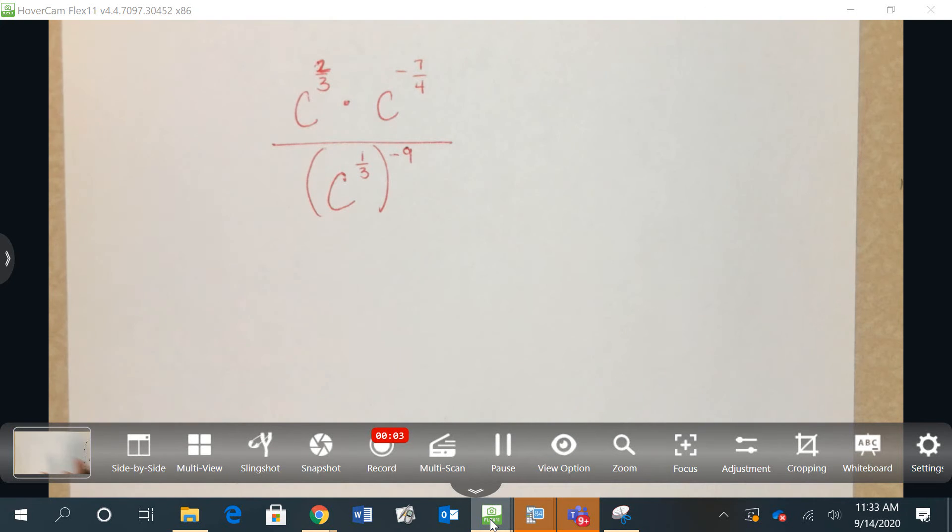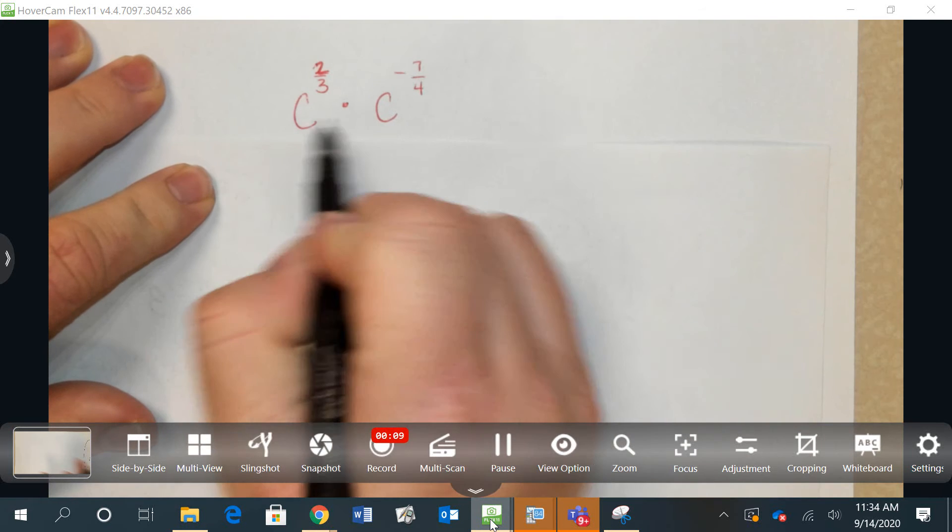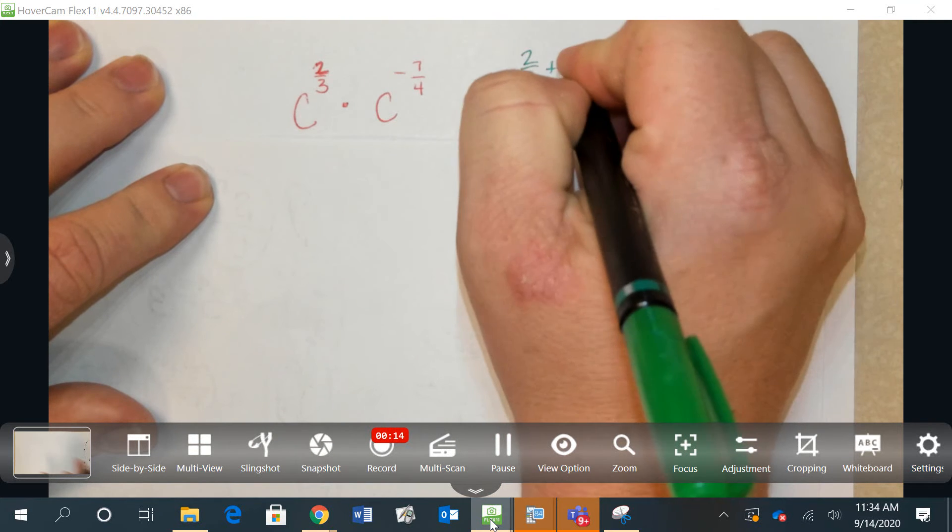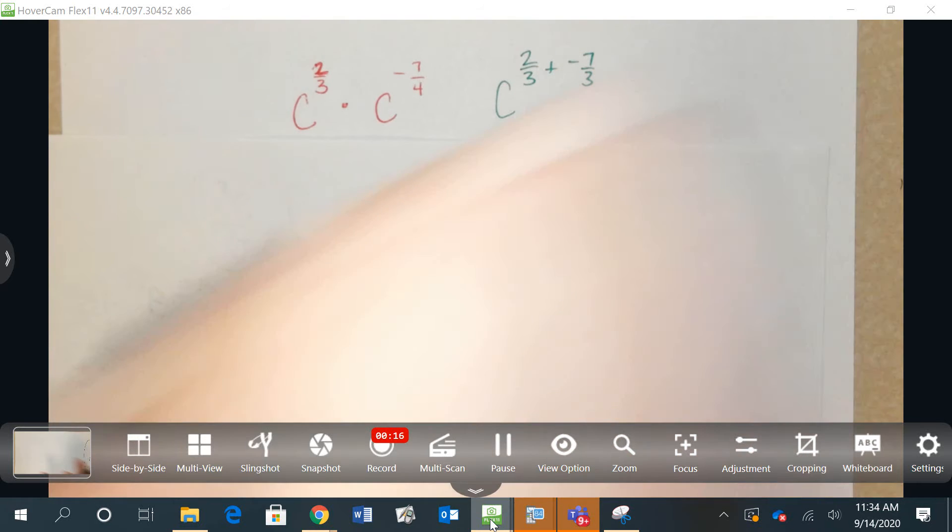Simplifying this expression, so I'm going to cover up the bottom and only worry about the top. Since I have the same base and I'm multiplying, I'm going to combine the two fractions by adding.